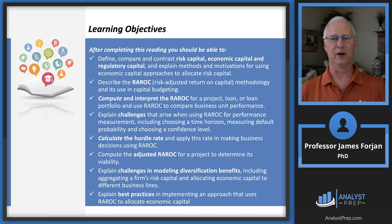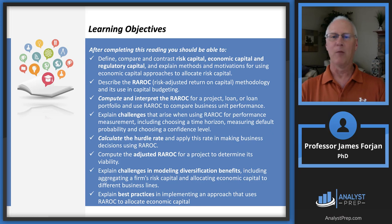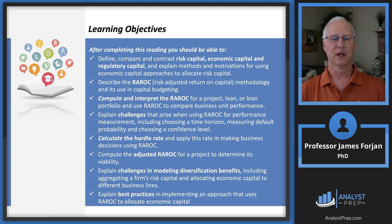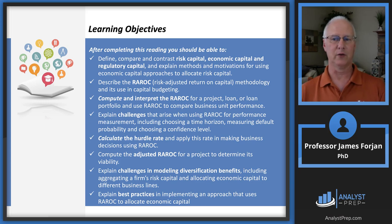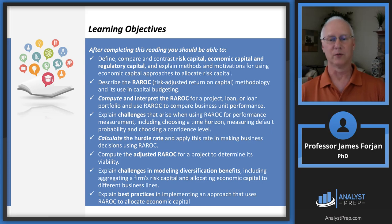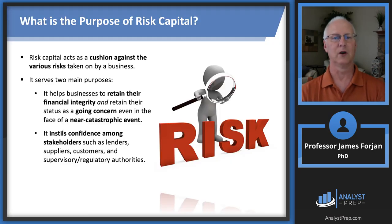The first learning objective covers risk capital, economic capital, and regulatory capital — we've talked about that before. Risk adjusted return on capital: there's a specific definition inside of this chapter, but we've done this from the very first accounting class. It's going to be net income over some investment. The next learning objective asks us to explain challenges — similar to challenges we've faced in previous chapters. And we'll end with some best practices. Let's start with that very first learning objective: what is the purpose of risk capital?